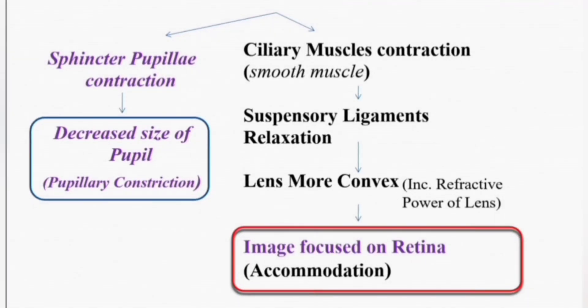Along with the accommodation reflex, two other things happen. Combined, this is called the near response — that is, accommodation, plus medial convergence of the eyeballs, plus pupillary constriction or decreased size of the pupil. These three processes together are called the near response. Hope you enjoyed this video. If you have enjoyed and understood this process, please consider subscribing to this channel and sharing it for more happy learning. Thank you for watching.